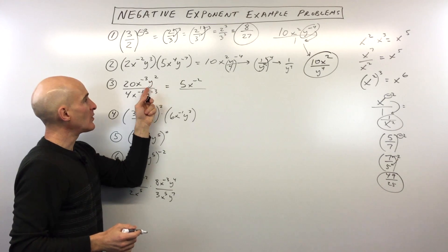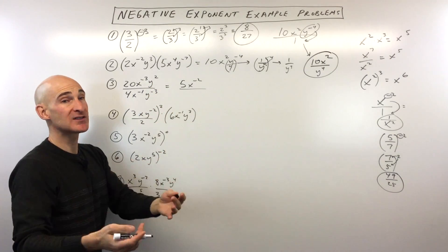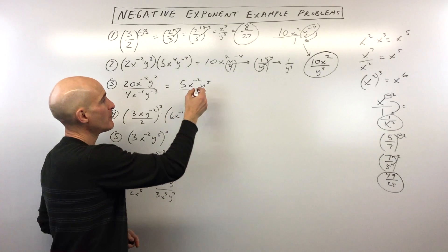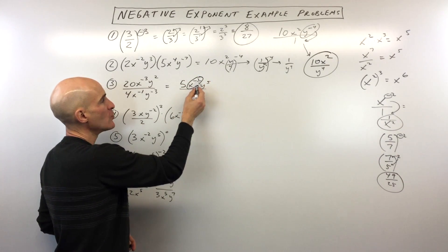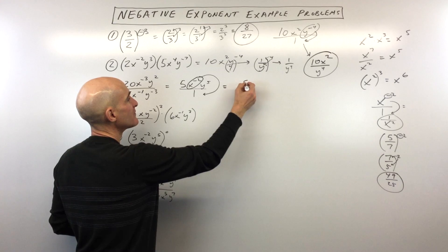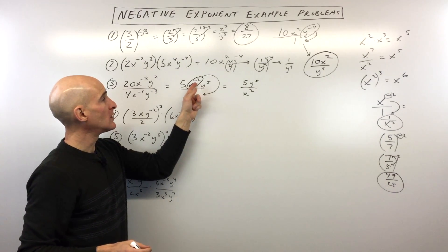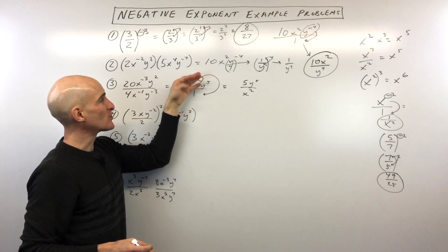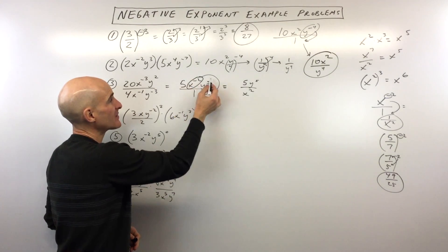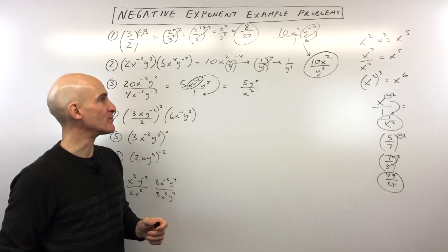Here we're dividing — same base y — so we take the numerator power minus the denominator power. 2 minus negative 3 is really like 2 plus 3, which gives us y to the fifth. When you get that negative exponent, you want to move that quantity to the other side of the fraction bar — that's like taking the reciprocal. So our final result is 5y to the fifth all over x squared. Note: this quantity is not in parentheses, so you're only moving the base — not flipping the whole fraction.